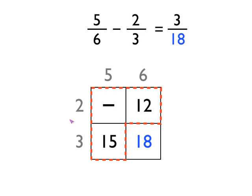The number outside of the red box, the 18, is the denominator in the answer, the bottom number. So 5 sixths take away 2 thirds is 3 eighteenths.